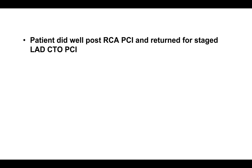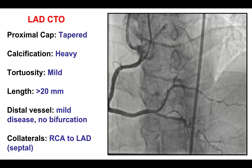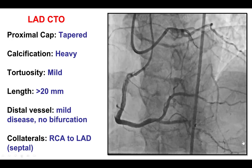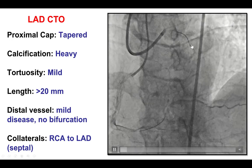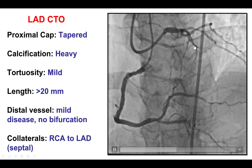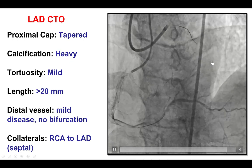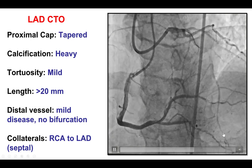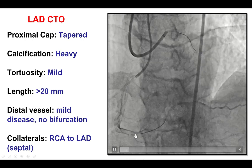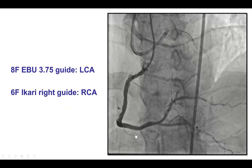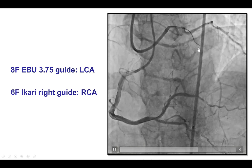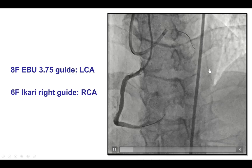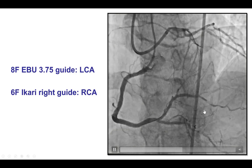The patient did well after the procedure and was subsequently referred for staged PCI of the LAD chronic total occlusion. This is the dual injection demonstrating a well-defined tapered proximal cap with approximately 30 to 40 mm lesion length. The distal vessel is patent and is filling via both epicardial as well as septal collaterals from the right coronary artery. The plan was to first perform an antegrade wiring attempt, followed by ADR if we became subintimal, followed by retrograde if that failed.